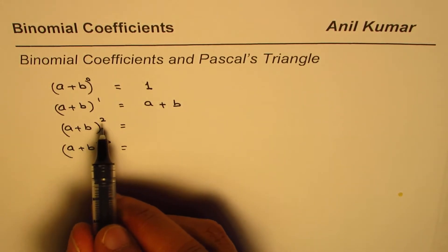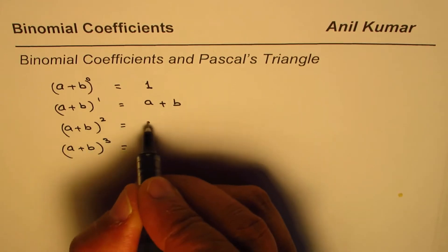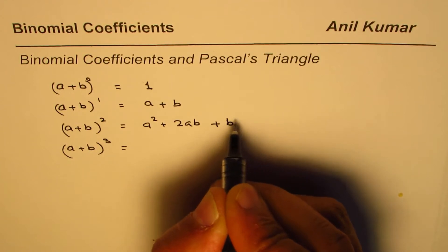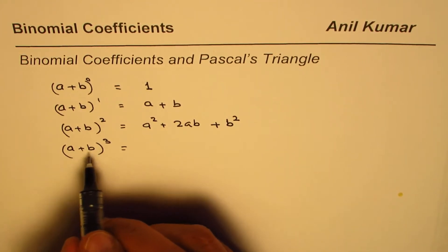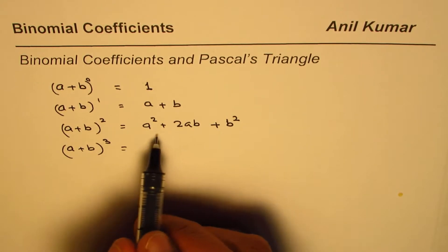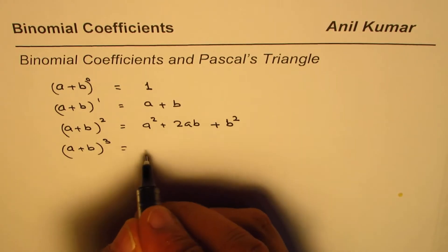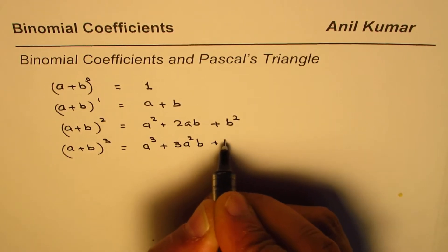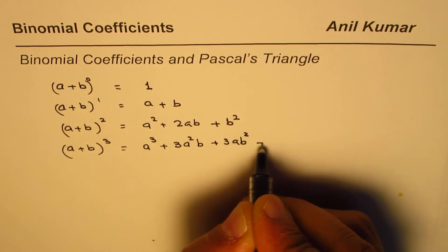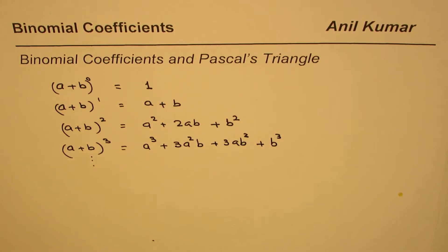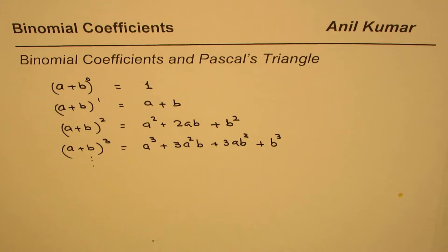If we have (a + b) squared, we know the formula: it should be a² + 2ab + b². For the cube, we can multiply a² + 2ab + b² by (a + b), expand and simplify. What we get is a³ + 3a²b + 3ab² + b³. Similarly, we can continue expanding and simplifying to get further terms.